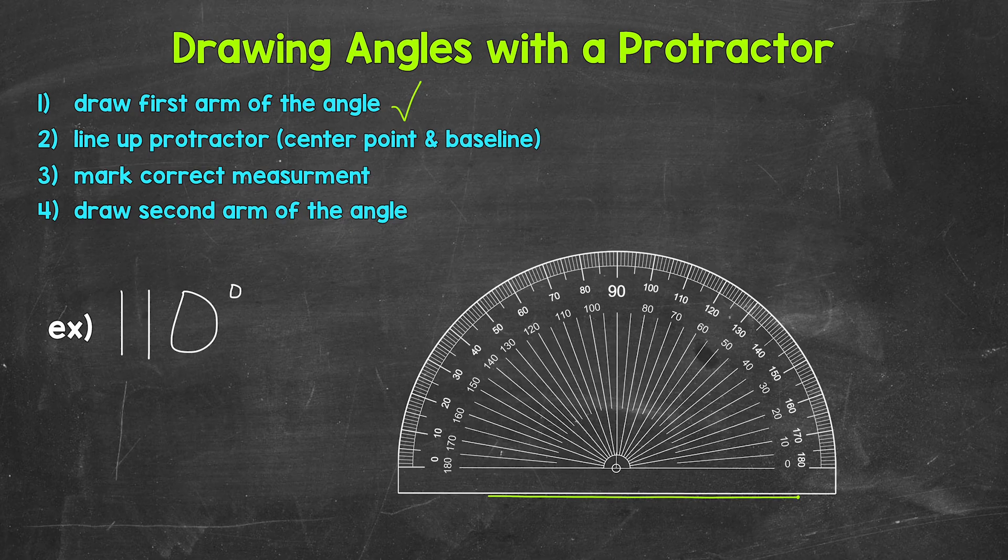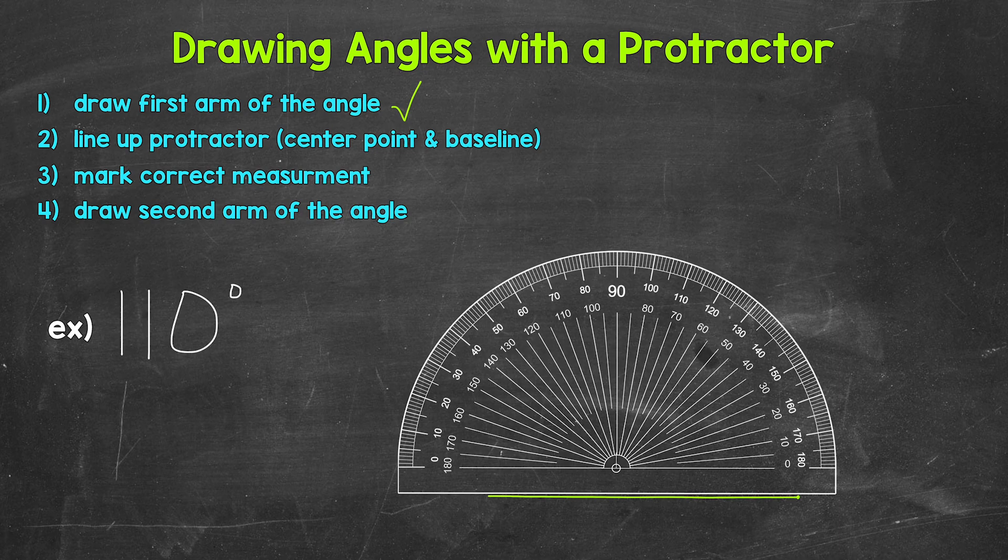Next, our second step, we need to line our protractor up. The center point needs to be on the end of the arm where we made that dot, and then the baseline needs to be lined up with the arm. So here is our protractor lined up.